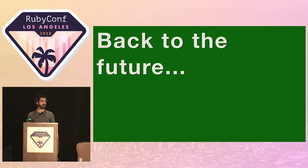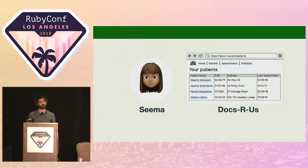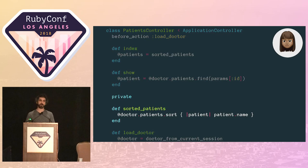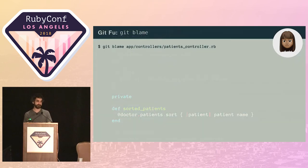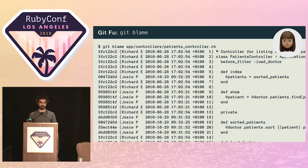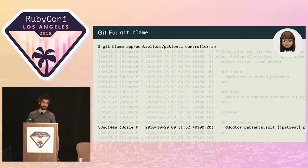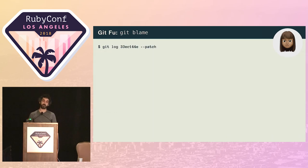Meanwhile, back in the present day, Seema has started a new task and is puzzling over why some code is sorting patients in memory rather than as part of a database query. She wants to know why and decides to use some Git-Fu. She runs Git blame to identify the revision for the line she's interested in, and passes it to Git log along with the patch option so she can see the full diff as well as the commit message.